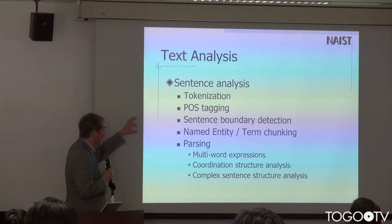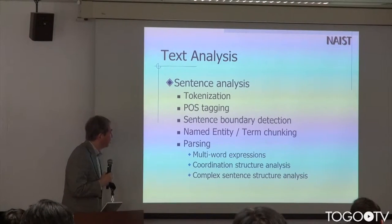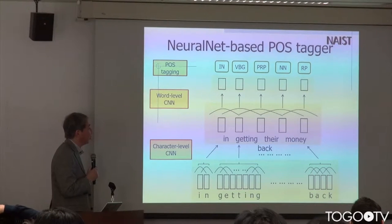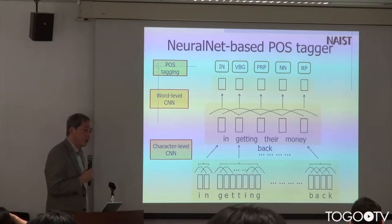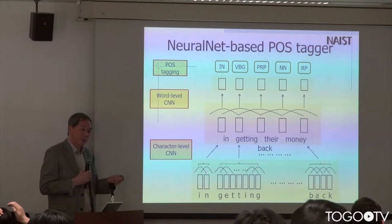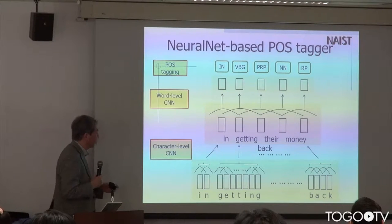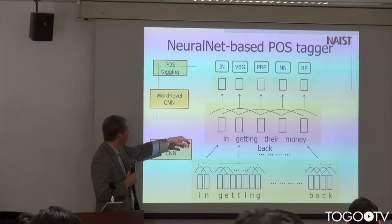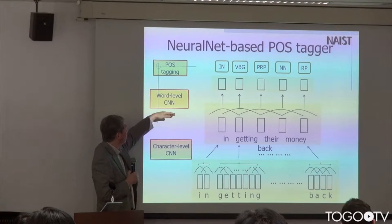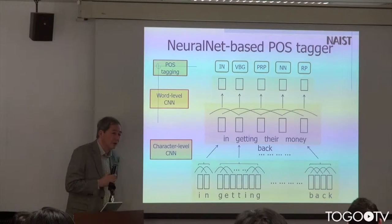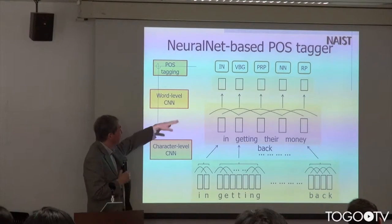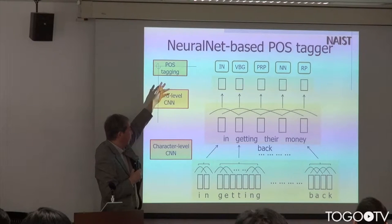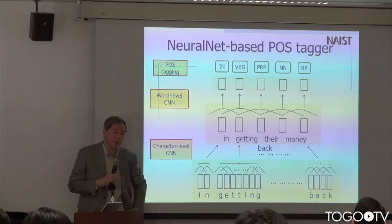We are re-implementing all text analysis tools. Recently we implemented a neural network-based POS tagger, and now we are applying the same technique to named entity chunking and sentence boundary detection. The system starts from character representation to construct word-level tokens, which are represented as word-level representations for annotation. Using the output of the POS level, we can do named entity annotation, or go directly to the named entity recognition level.